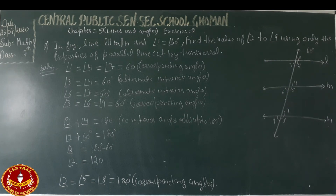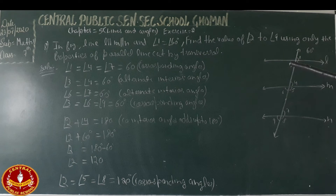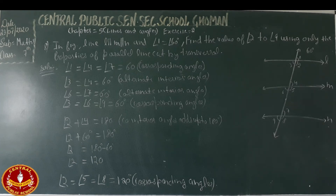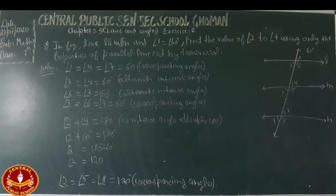So angles 3, 6, and 9 are all 60 degrees. Angle 3 was found using alternate interior angles giving 60 degrees, and angle 9 is found using the corresponding angles property. All three — angles 3, 6, and 9 — are equal to 60 degrees.